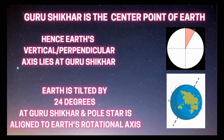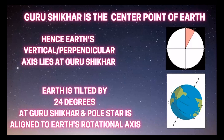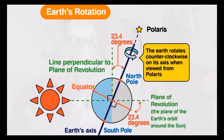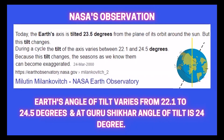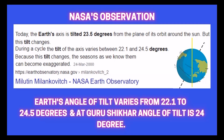Polestar is aligned to Earth's rotational axis, and the angle of tilt of 23.5 degrees is shown. There is a NASA observation that Earth's angle of tilt varies from 22.1 to 24.5 degrees, and at Guru Shikha the angle of tilt is 24 degrees.